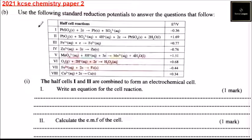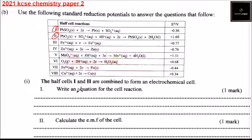Part B, question 7b: use standard reduction potentials to answer the questions that follow. We are given 8 half-cell reactions. Half cells 1 and 2 are combined to form an electrochemical cell. The most positive E° value is the oxidizing agent, which gains electrons. Reaction 2 is gaining electrons, so that equation remains as written.